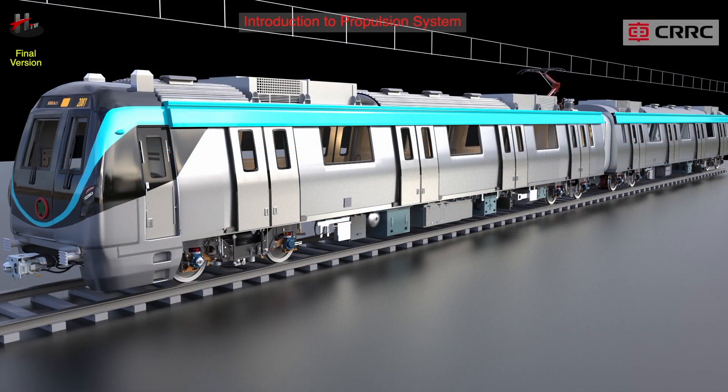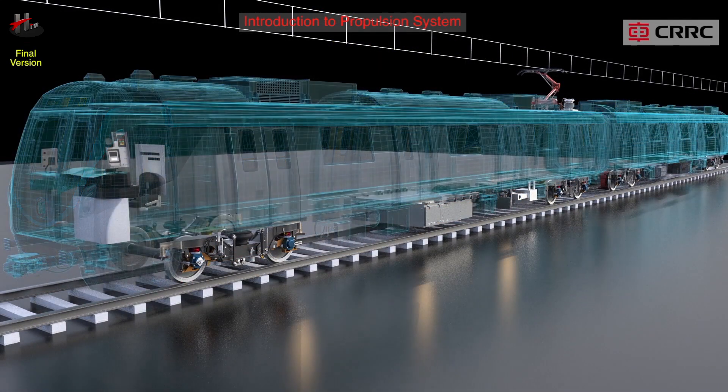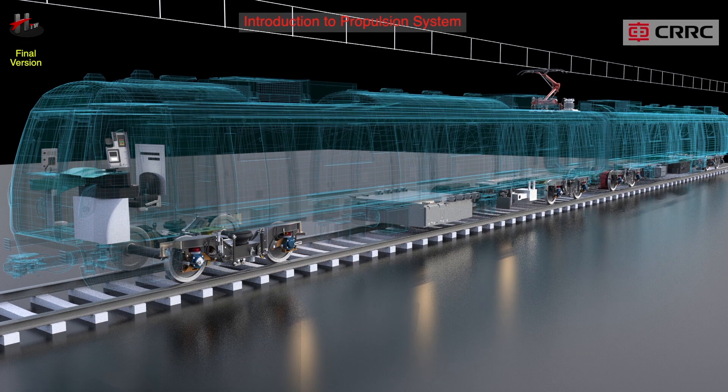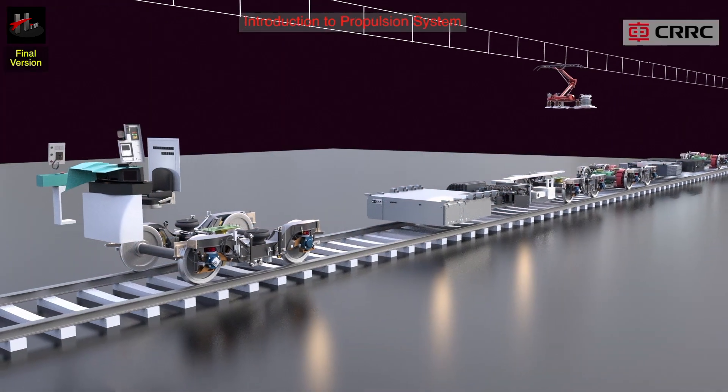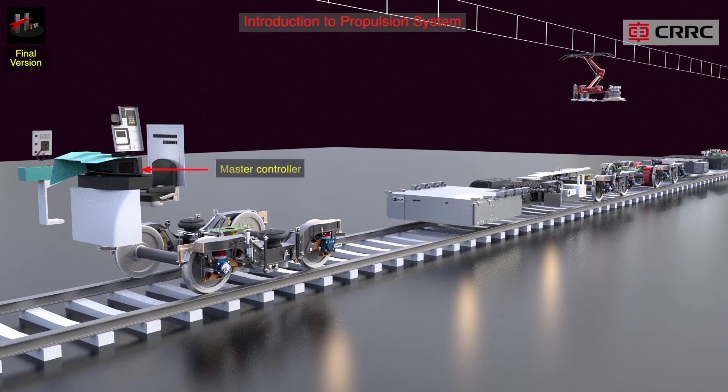The propulsion system is the system that generates or produces a driving force to propel the train in forward motion. The propulsion system comprises of the following main equipment shown in the table.